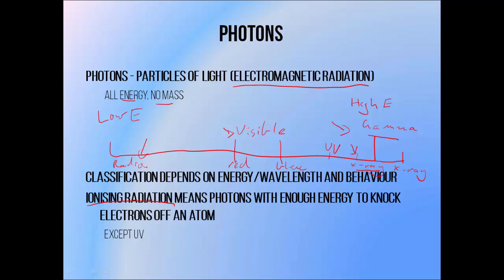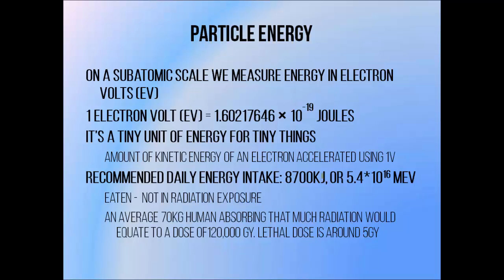Ultraviolet radiation does have enough energy to cause ionization, which is why it causes sunburn, but for some reason it's not classified as ionizing radiation. The standard unit of energy is the joule, but the actual unit used for a specific application depends upon the amount of energy that's usually involved. The energy involved in radiation interactions is much, much smaller, so we use a much smaller unit. The one that we favour in radiotherapy is the electron volt, or eV for short.